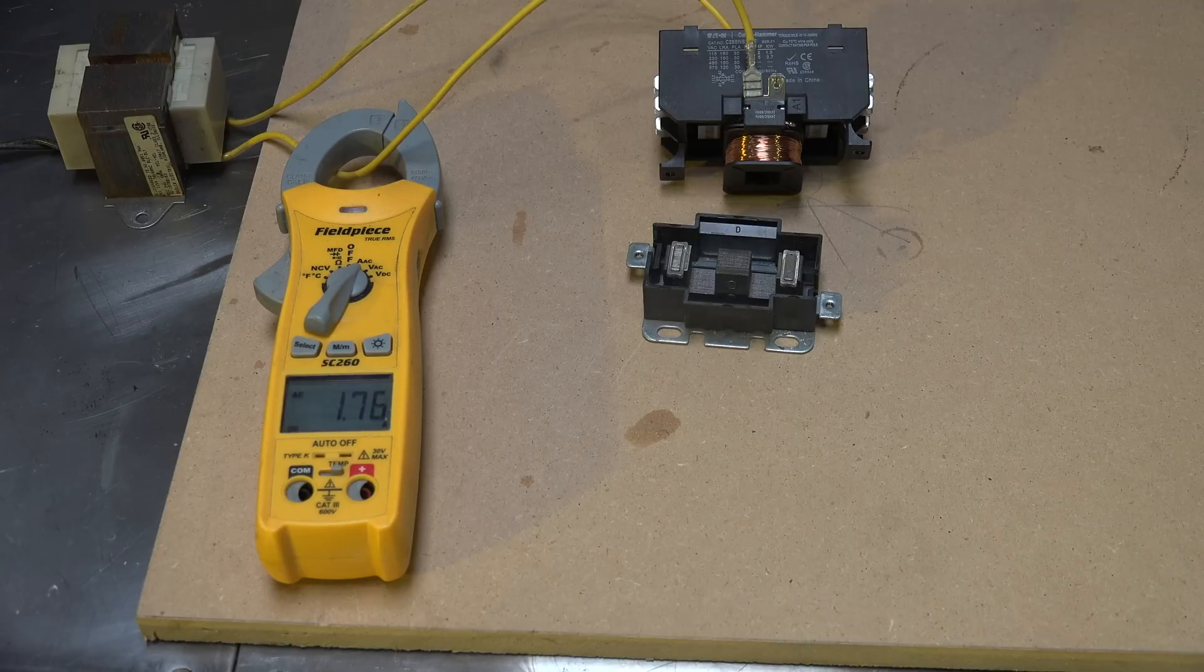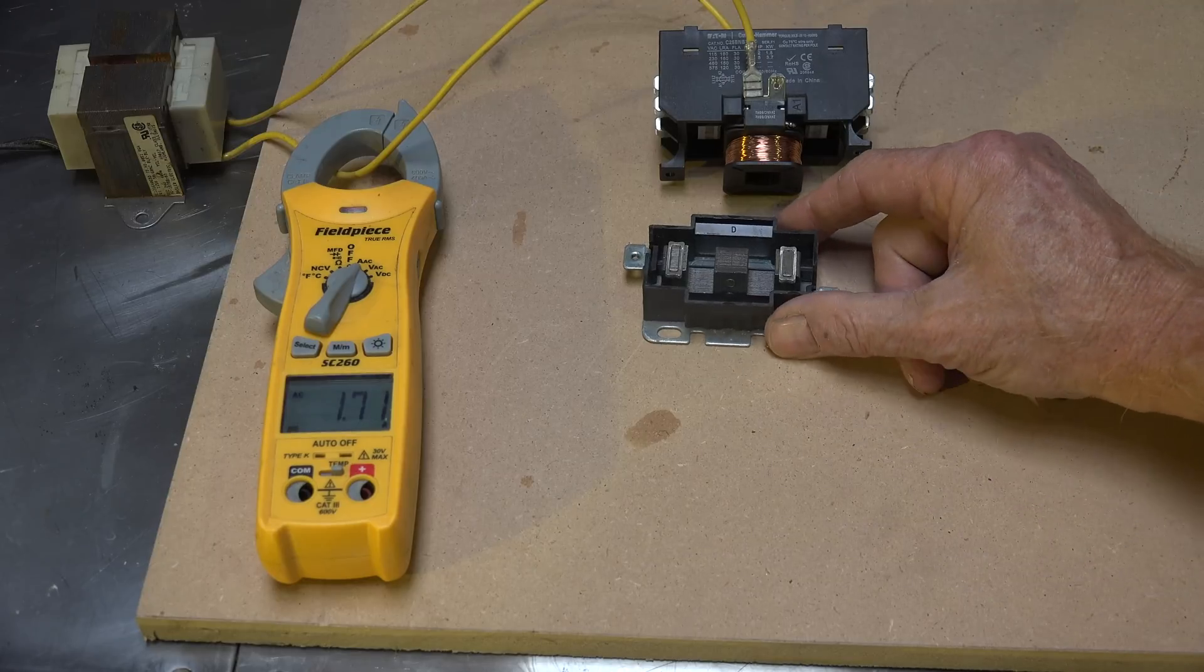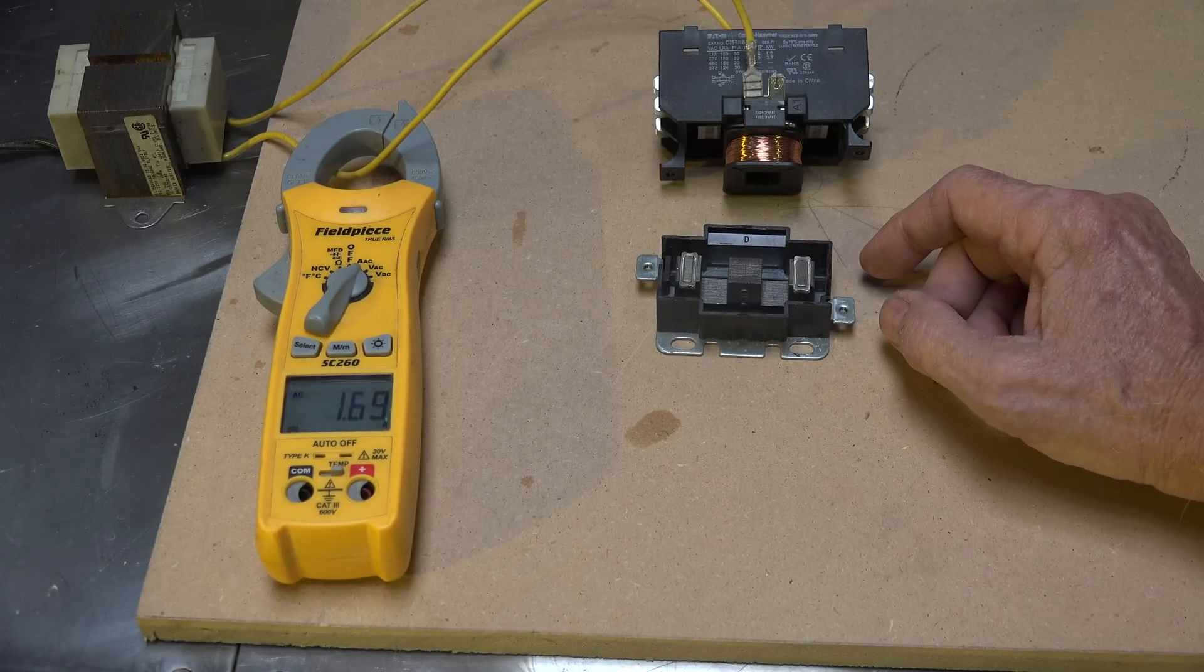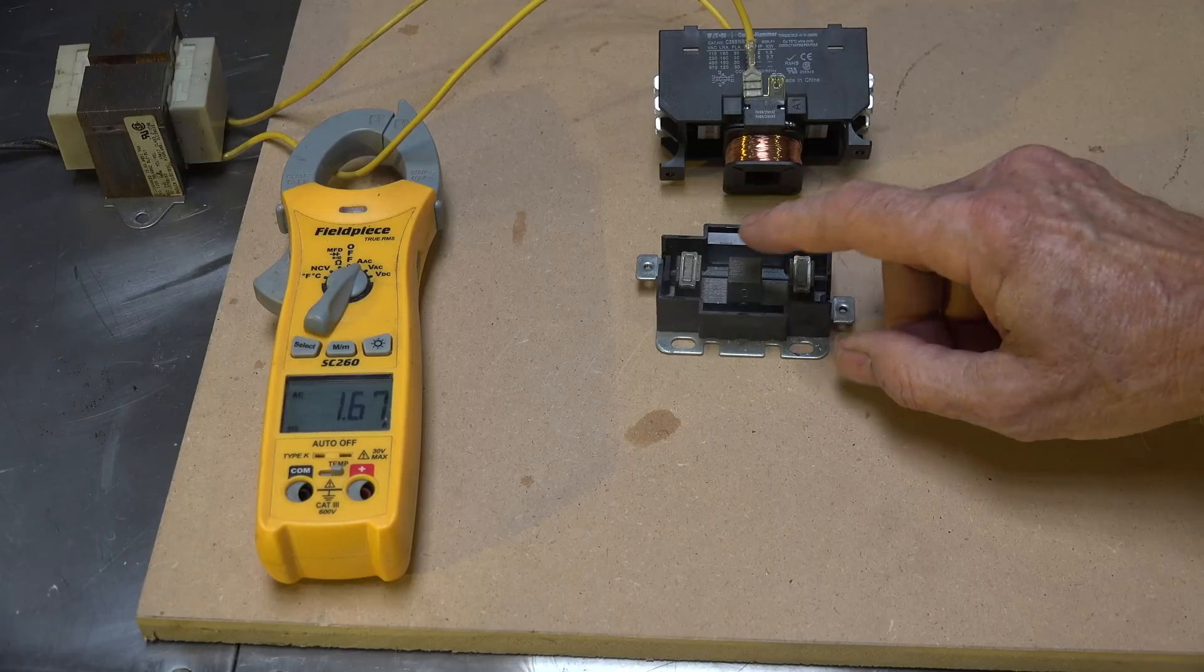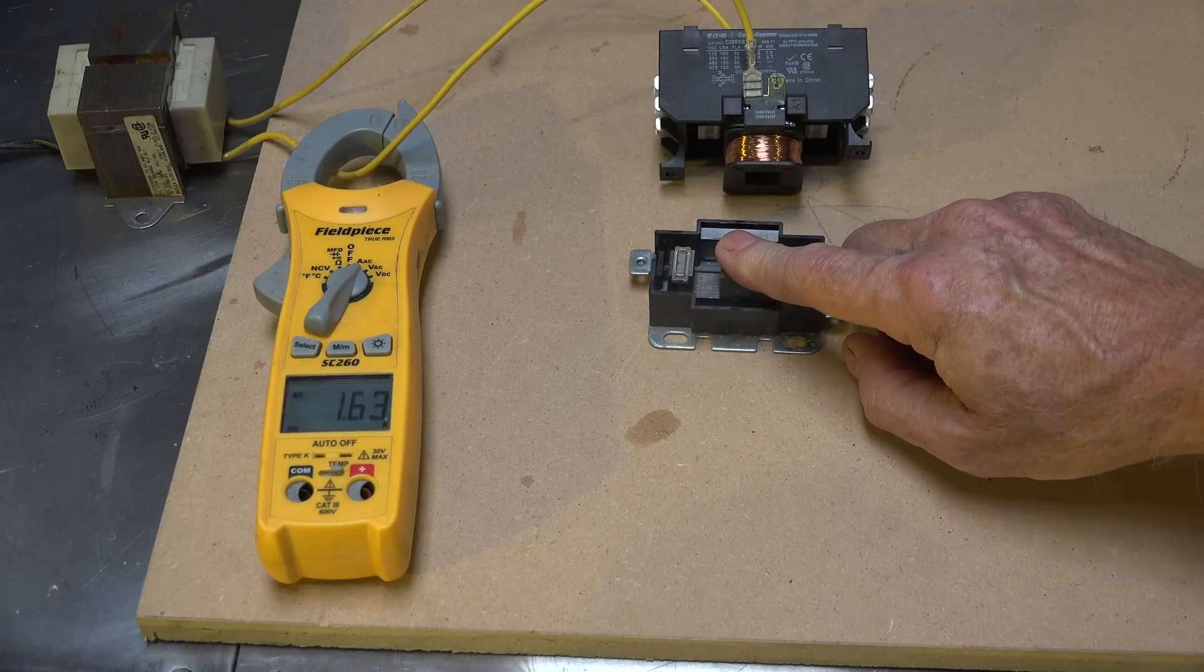Where we were only drawing 0.28 before, so it's because this has been taken off. Now let's take this apart a little bit farther.